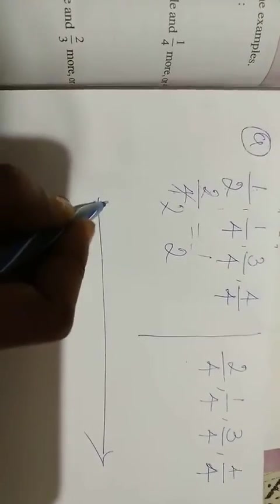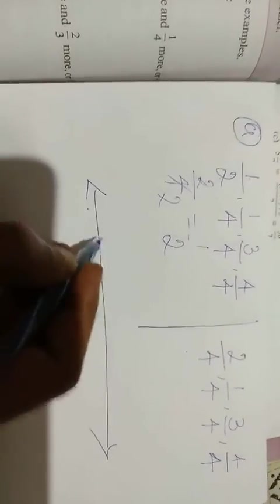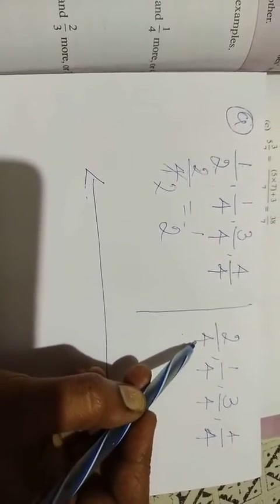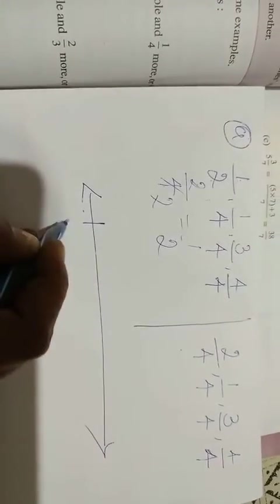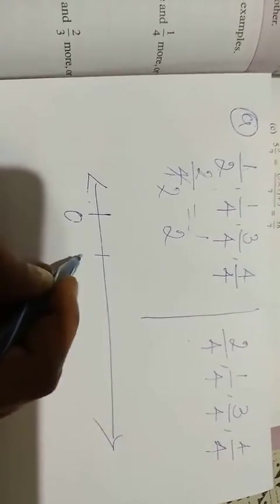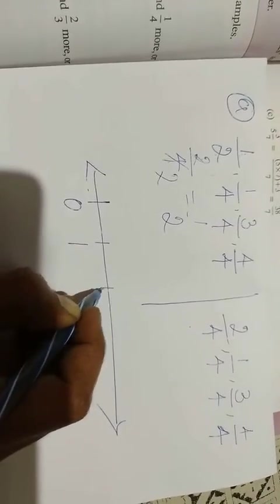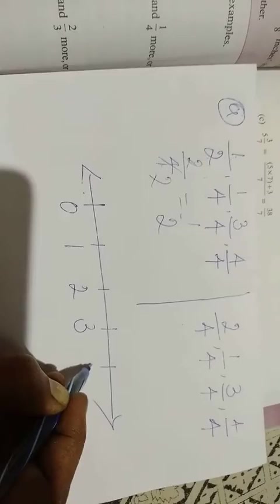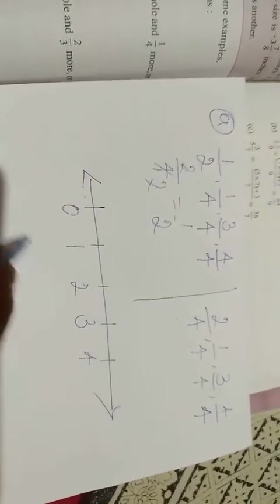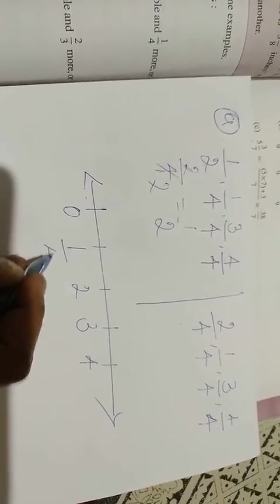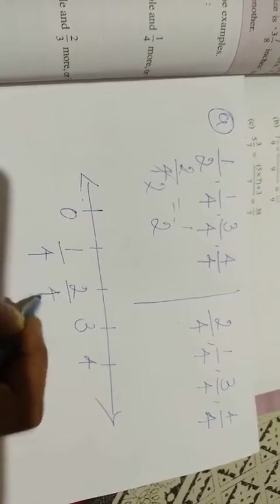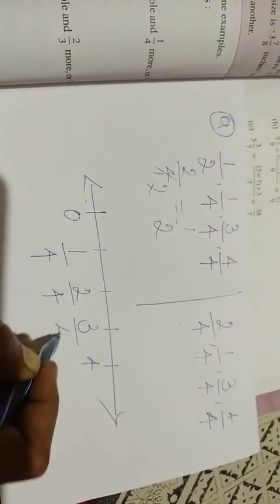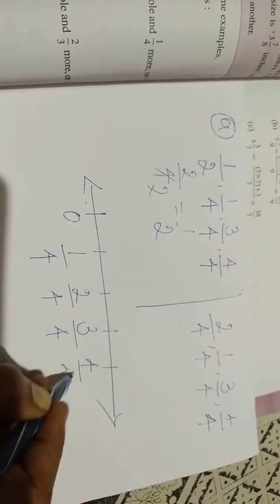Now draw one number line. How many parts are there? Total 4 parts. 0 to 4: 0, 1, 2, 3, 4. Here we have 1 by 4, 2 by 4, 3 by 4, and 4 by 4.